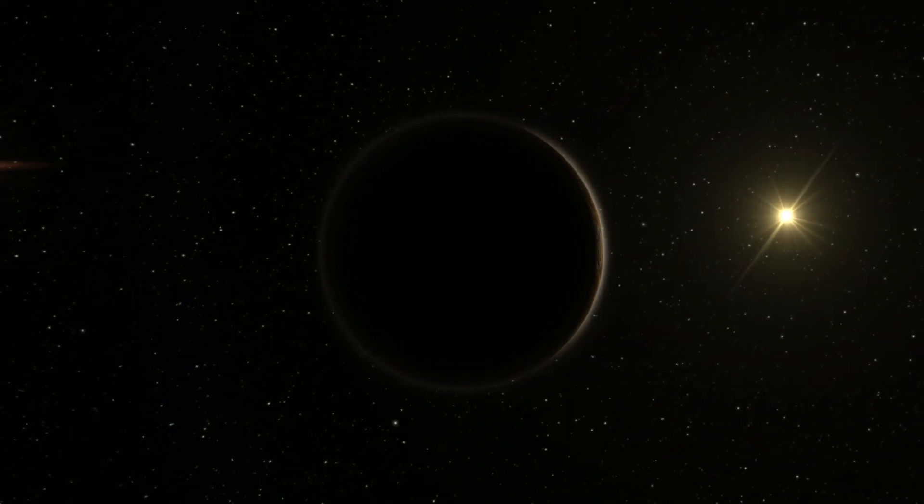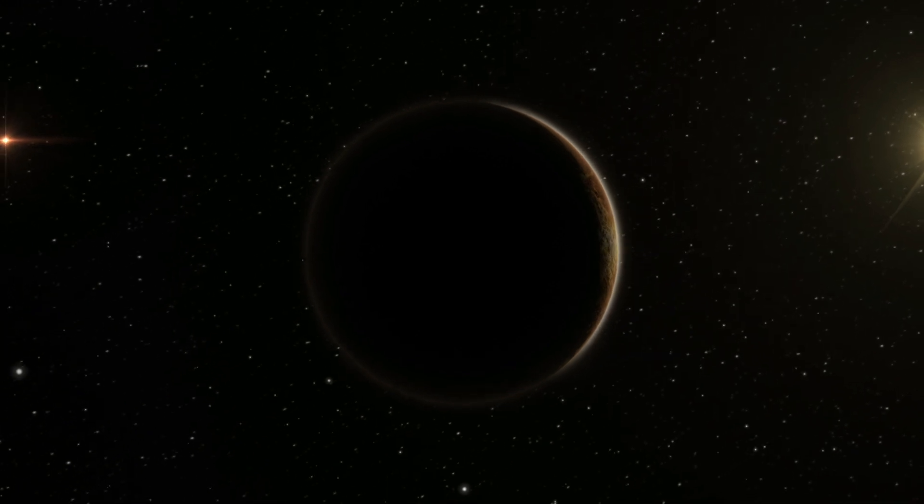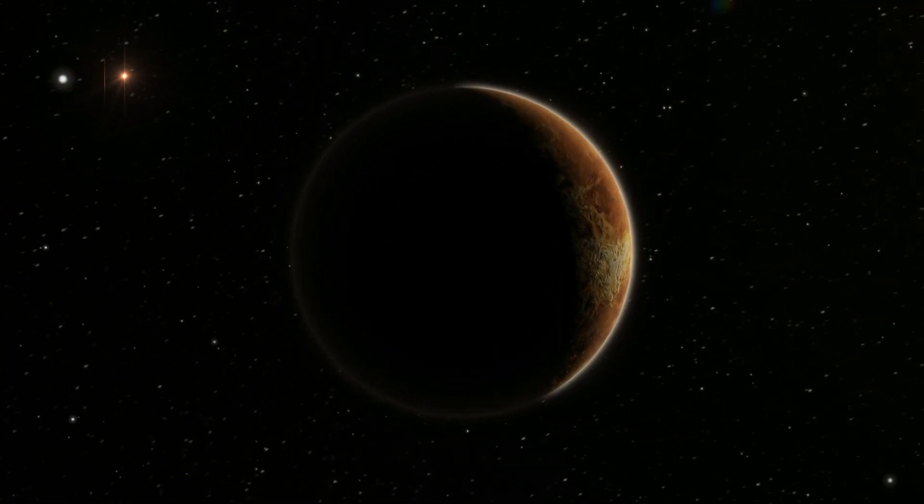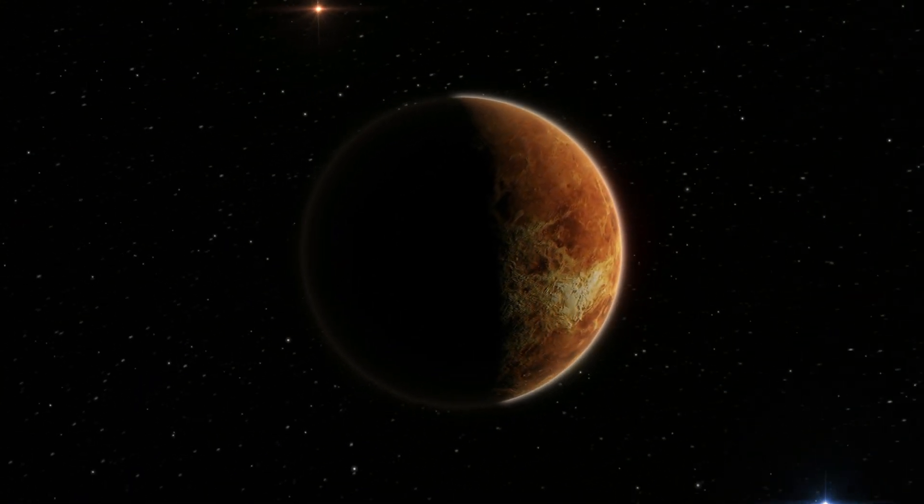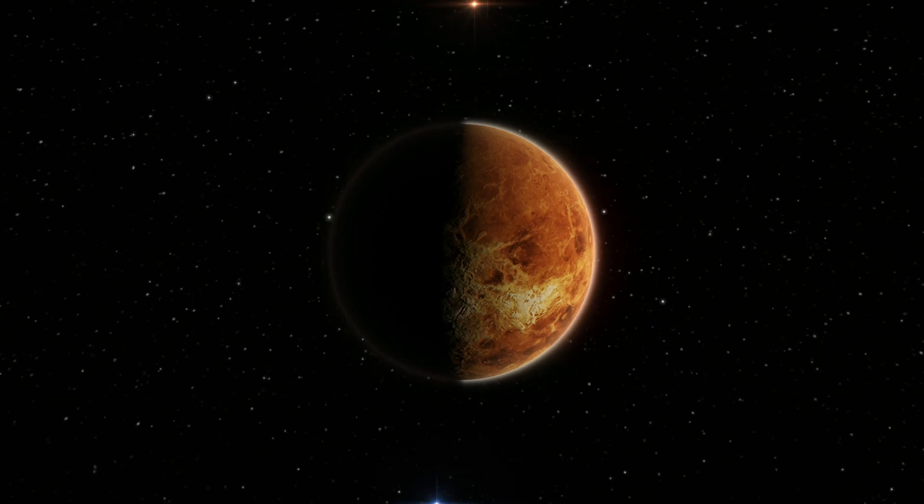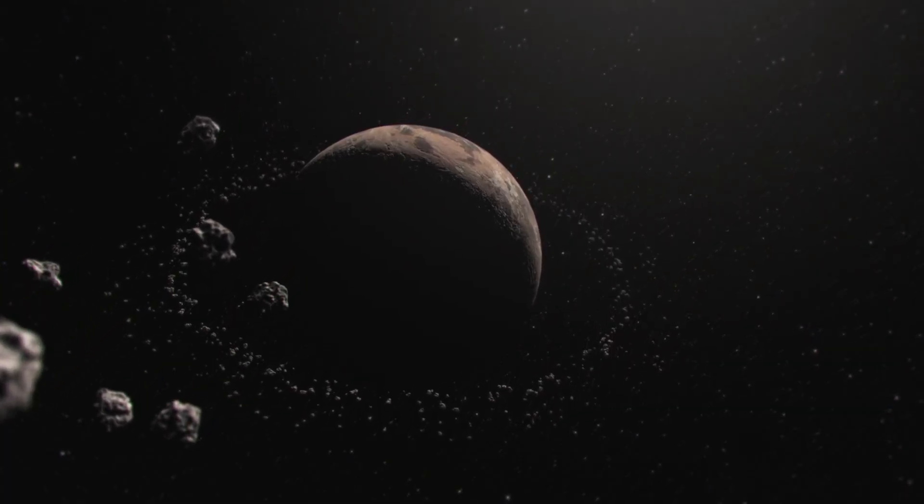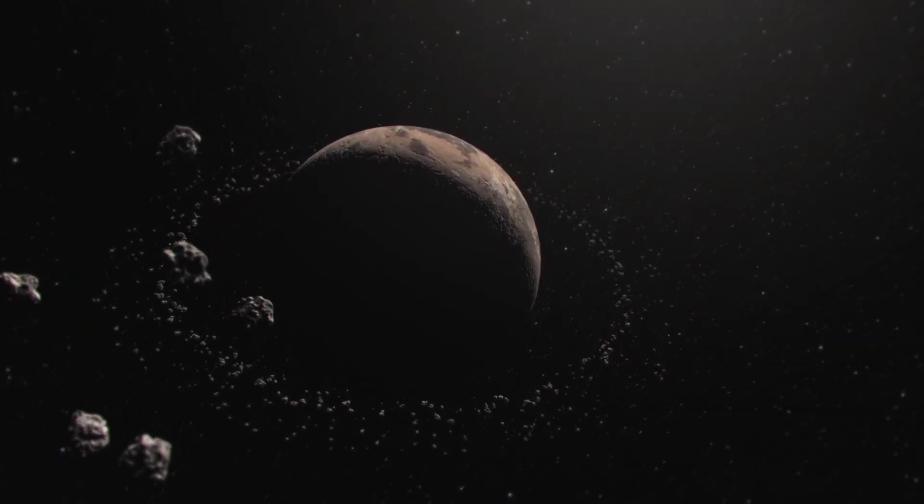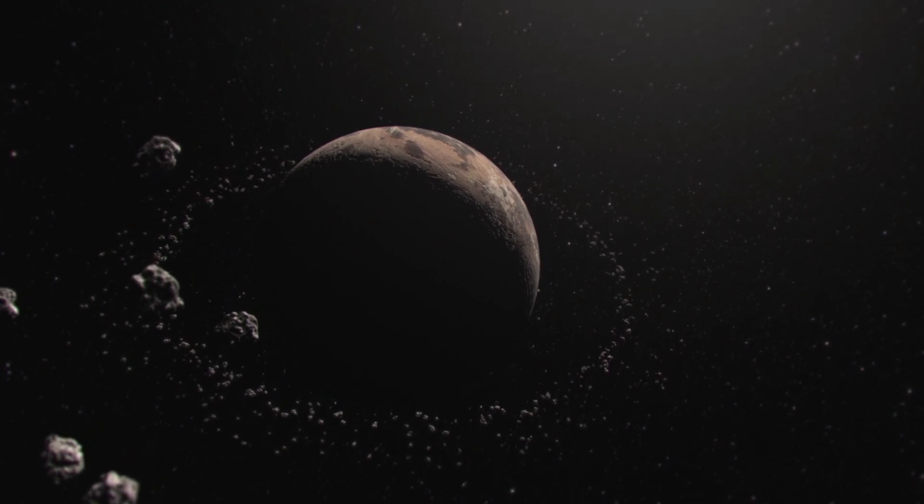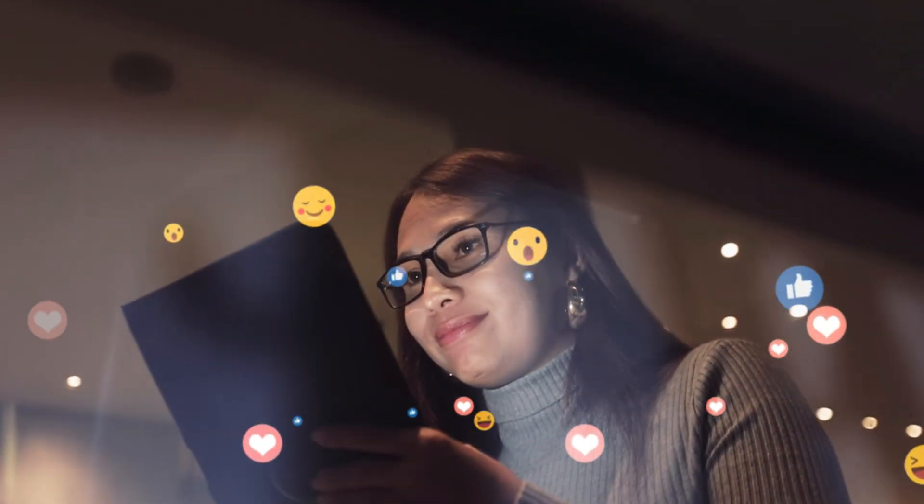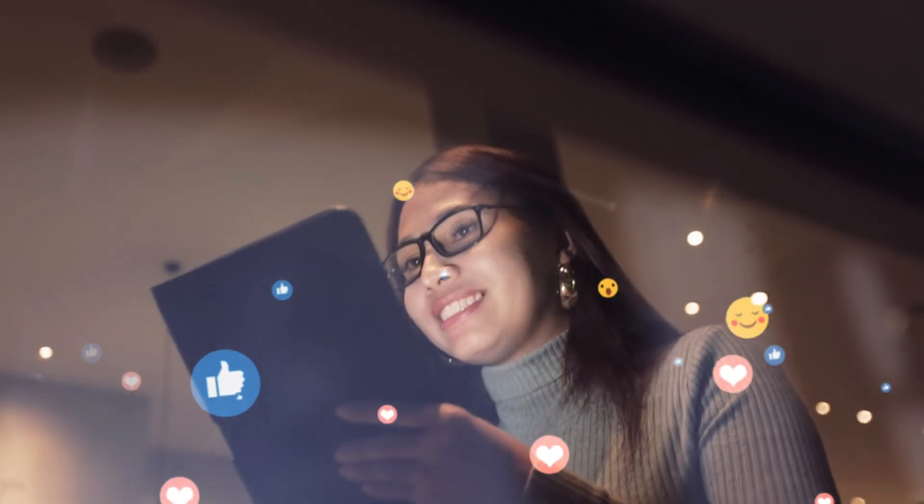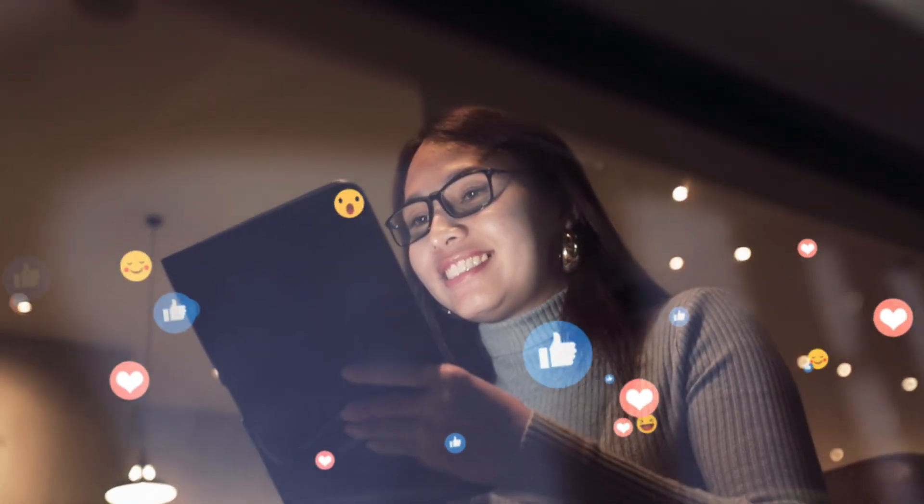But Kepler-70b serves as a stark reminder of the extreme environments that exist in our universe. It's a planet where the very atoms are ripped apart and reassembled in a chaotic dance of unimaginable energy. Now, you might be thinking, well, at least we don't have to worry about that kind of heat here on Earth. And you'd be right.